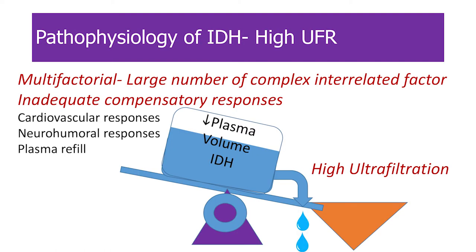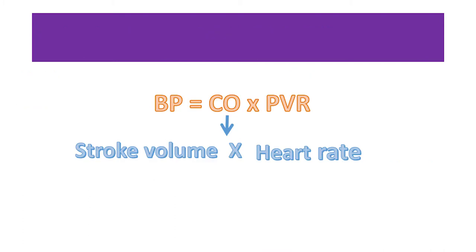In the pathophysiology, a large number of complex interrelated factors play a role. But most important is the decrease in plasma volume, resulting from ultrafiltration when the compensatory responses are insufficient or inadequate. These compensatory responses are the cardiovascular responses, neurohumoral responses, and the plasma volume reflexes. Blood pressure is a function of cardiac output and cardiovascular resistance, and cardiac output is the function of stroke volume and heart rate.